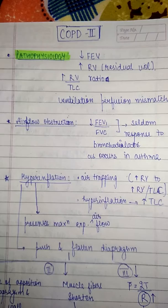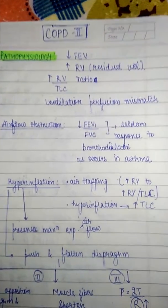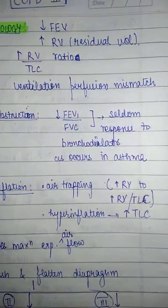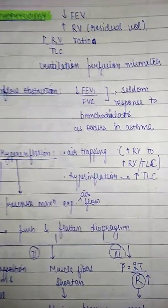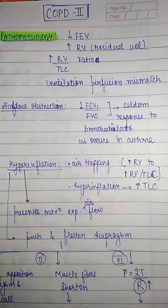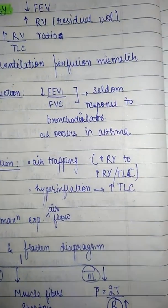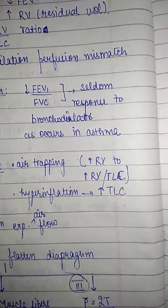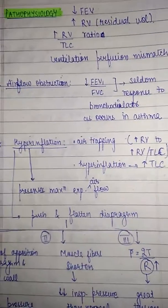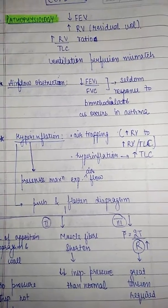There is airflow obstruction — FVC decreases and it will seldom respond to bronchodilators as occurs in asthma. There is hyperinflation and air trapping, due to which residual volume increases. Hyperinflation will also increase the total lung capacity. Hyperinflation basically preserves maximum expiratory airflow.